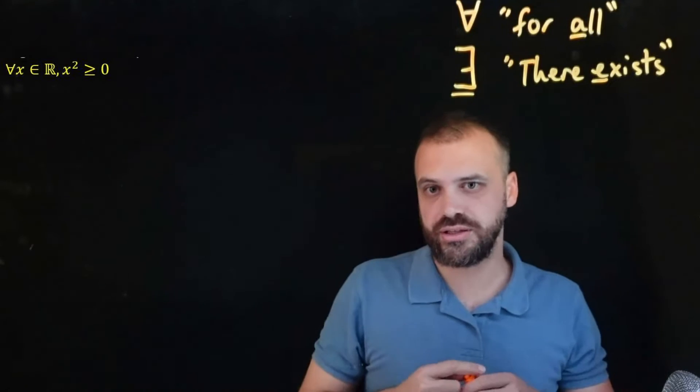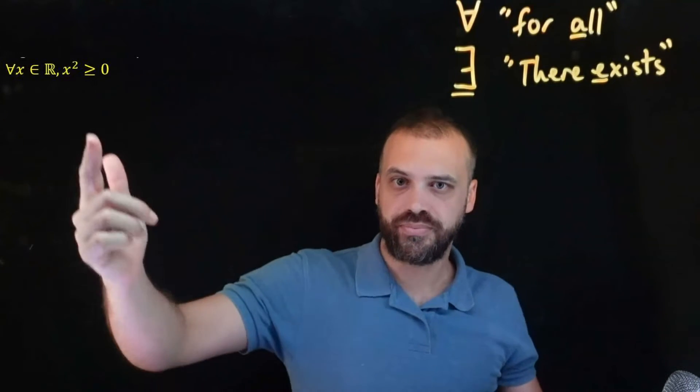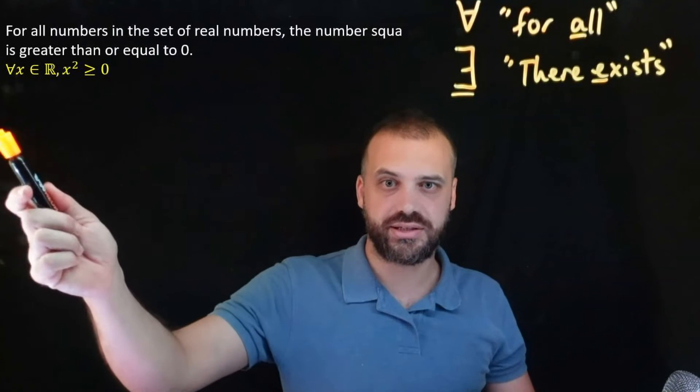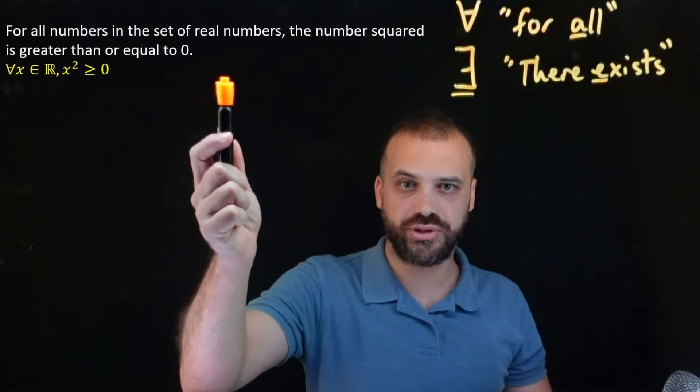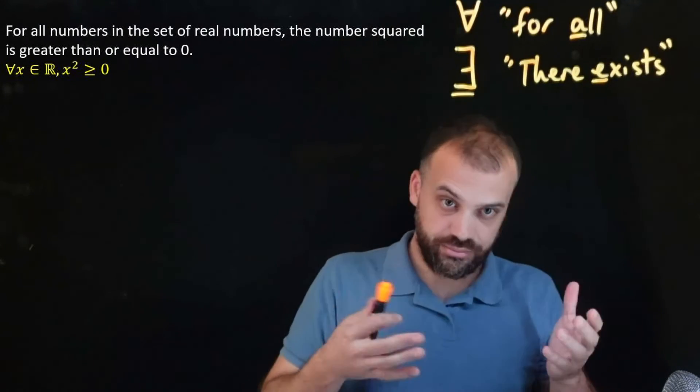Think about that in your head for a second. For all numbers in the real numbers, for all numbers on the number line, x squared is greater than zero. That's true. That's what that sentence says. For all numbers in the set of real numbers, the number squared is greater than or equal to zero.